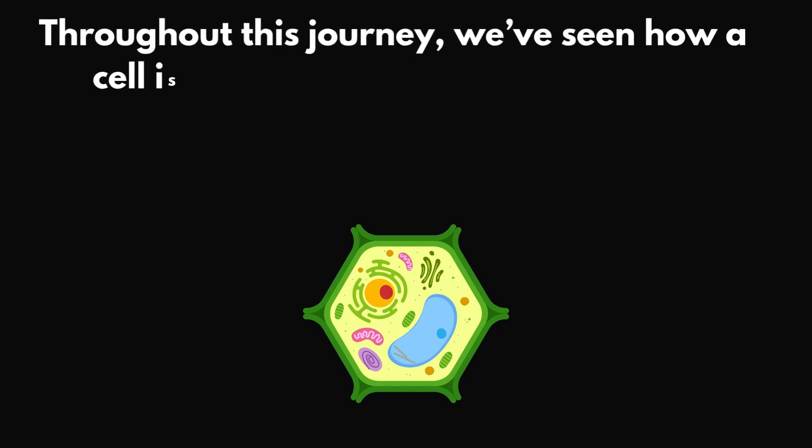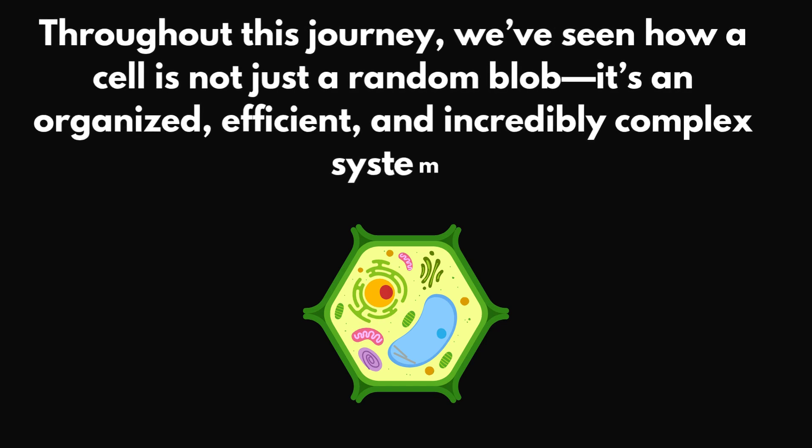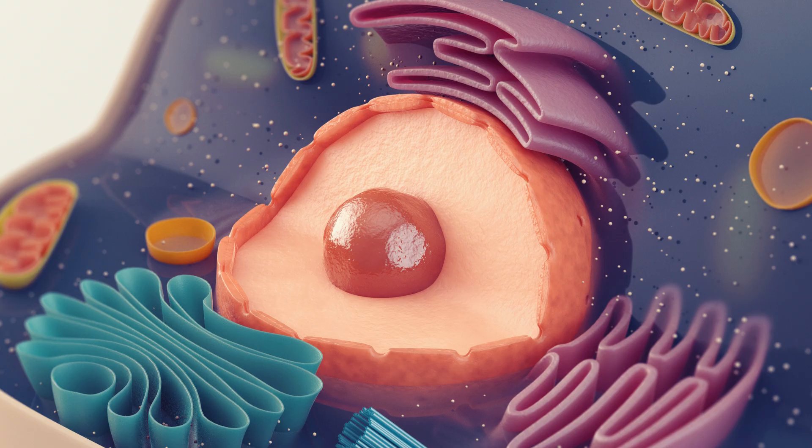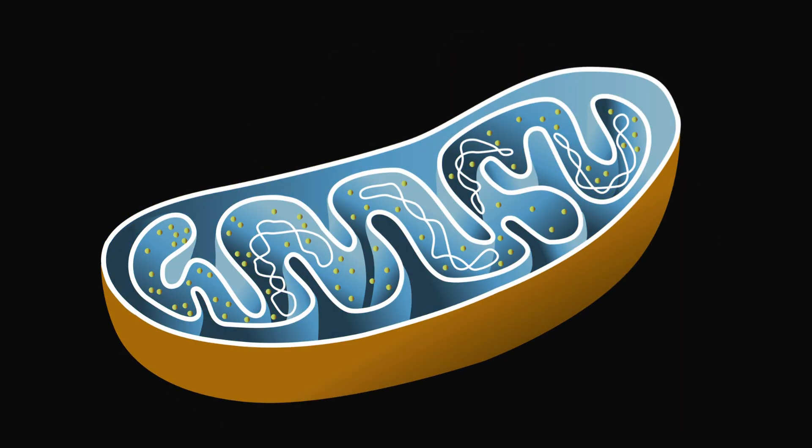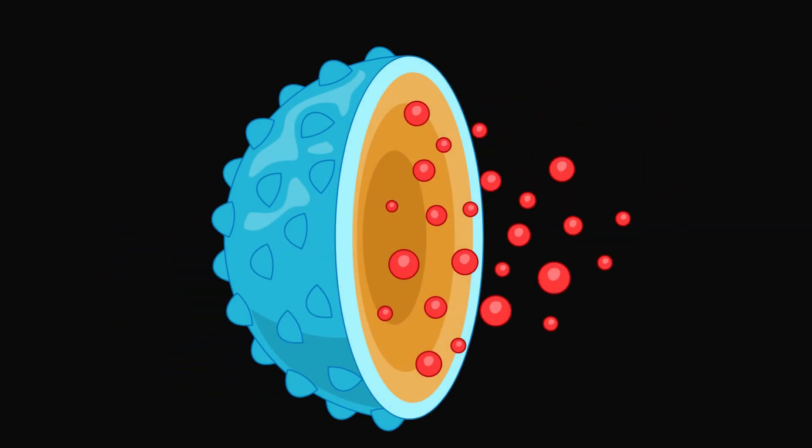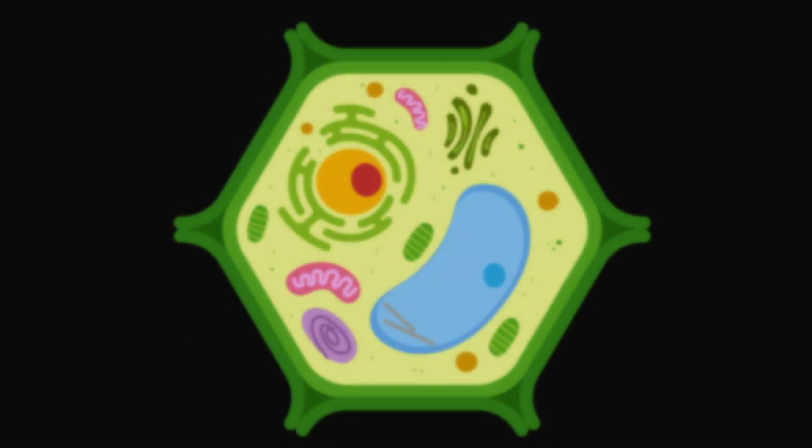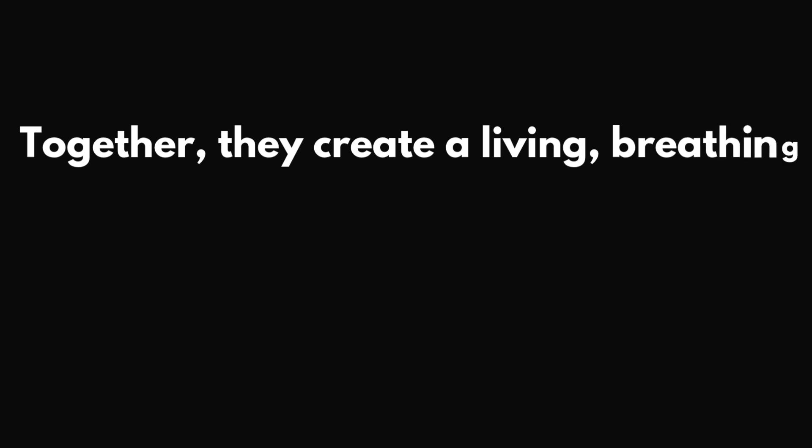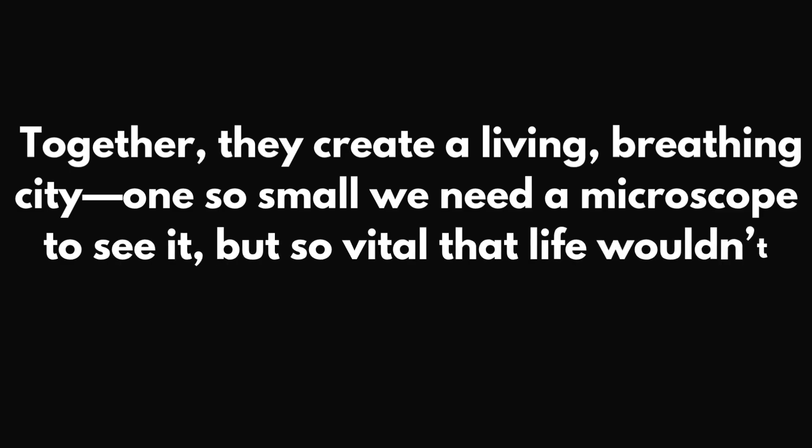Throughout this journey, we've seen how a cell is not just a random blob. It's an organized, efficient and incredibly complex system. The nucleus runs the show, the ribosomes and ER make the products, the Golgi packages them. The mitochondria power it all, the lysosomes clean up and the vacuoles store supplies. In plant cells, the chloroplasts capture sunlight and the cell wall keeps everything standing tall. Together, they create a living, breathing city. One so small we need a microscope to see it, but so vital that life wouldn't exist without it.